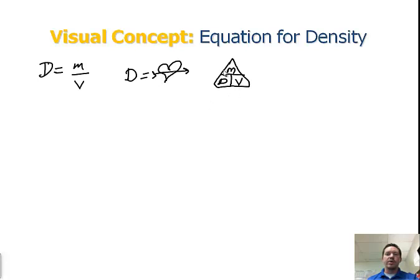So in order to use this triangle, you just cover up the variable that you want to find, so the one you don't know about. So if you want to solve for density, cover up density, and then you've got mass, and the line here represents divide. So when you're going from the top to the bottom, you're dividing.